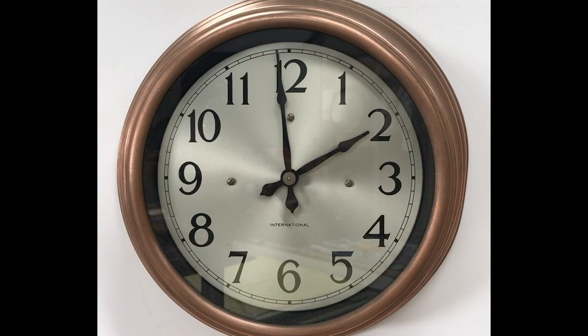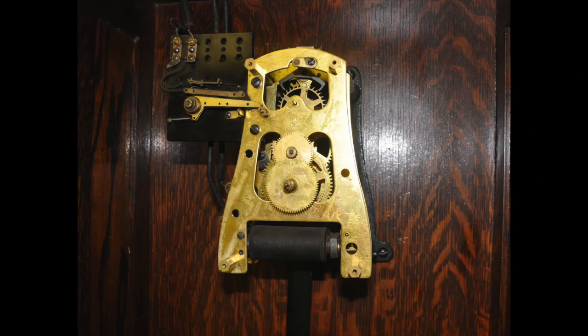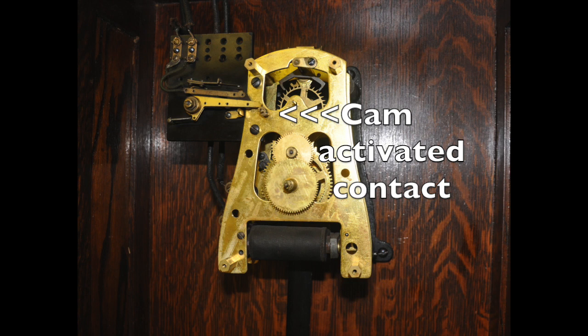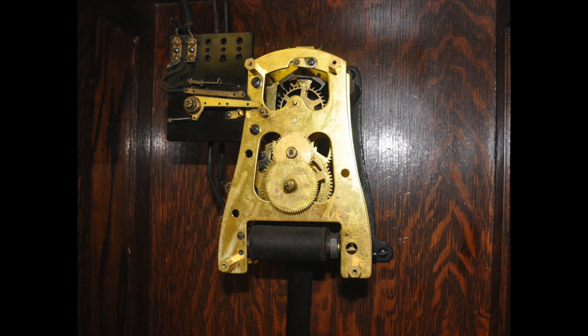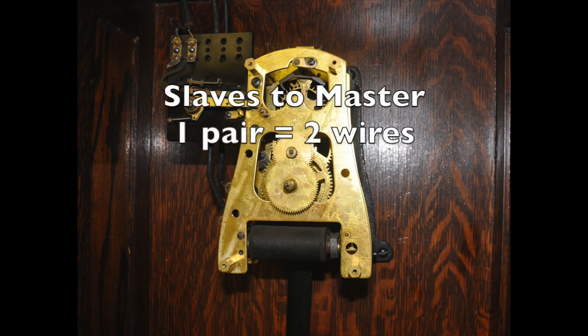First let's look at the master clock. All but the earliest IBM master clocks are equipped with a cam activated contact that sends an impulse every minute to both wind the mainspring and advance the slave clocks. The slaves were connected to the master with a single pair of wires.